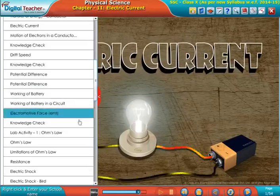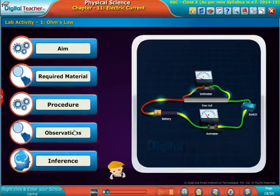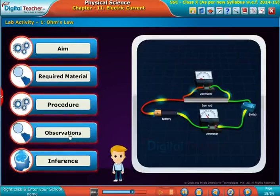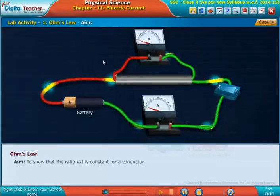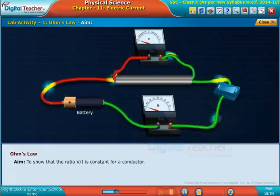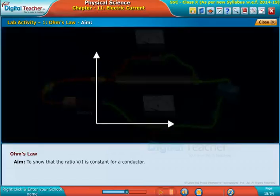Welcome to the chapter on electric current. Let us now do a lab activity to learn about Ohm's law. The aim of this lab activity is to show that the ratio V/I is constant for a conductor.